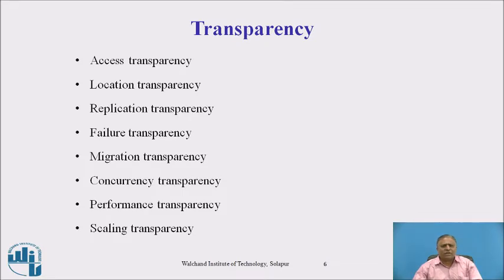Migration transparency means migration of an object is handled by the system in a user-transparent manner. There are three issues: migration decisions — deciding which process to migrate and where; the source node and destination node; no change in the name of the object after migration; and IPC (inter-process communication) for the migrating process executing on the destination node.